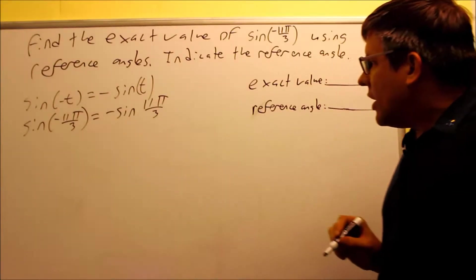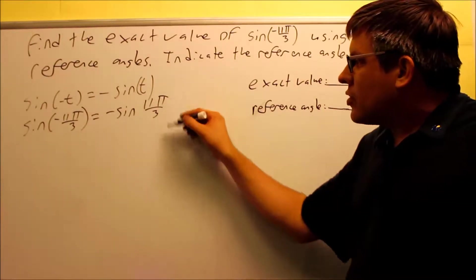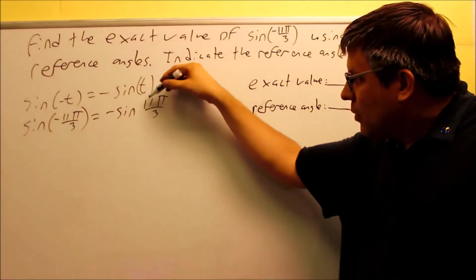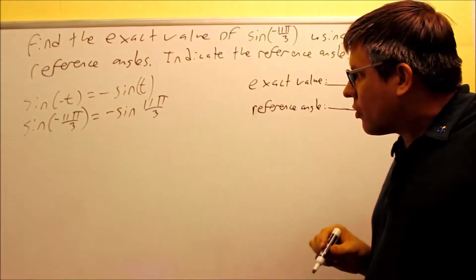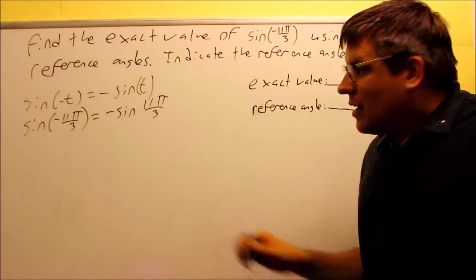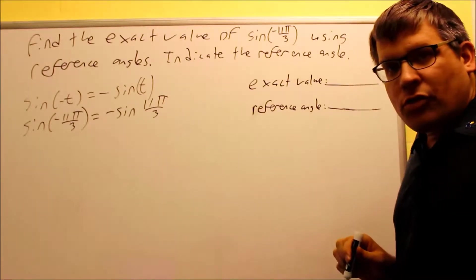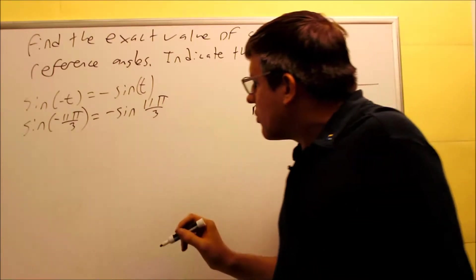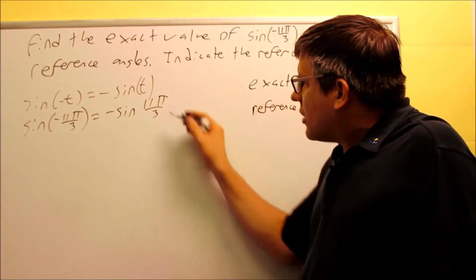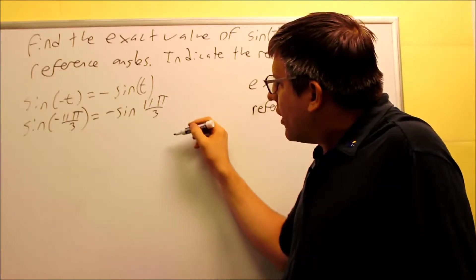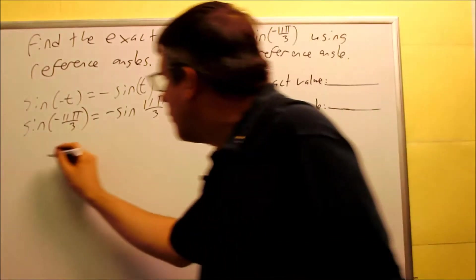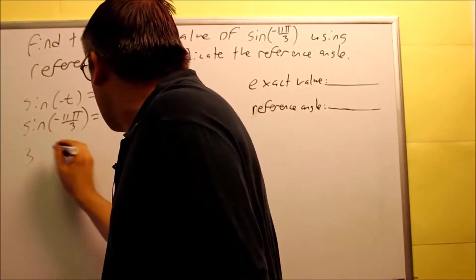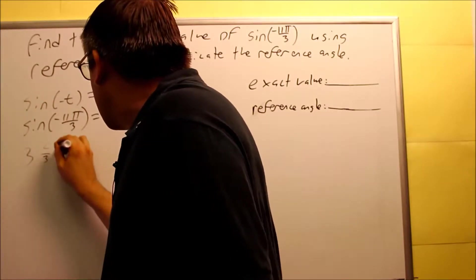Now the 11π over 3, I want to figure out how many times 2π can divide into that. I already know it's more than 2π because the fraction 11 over 3 is more. If I take the fraction 11 over 3 and rewrite it as a mixed number, 3 goes into 11, that's going to be this fraction right here. It's going to go in 3 times, and I have 3 and 2 thirds.